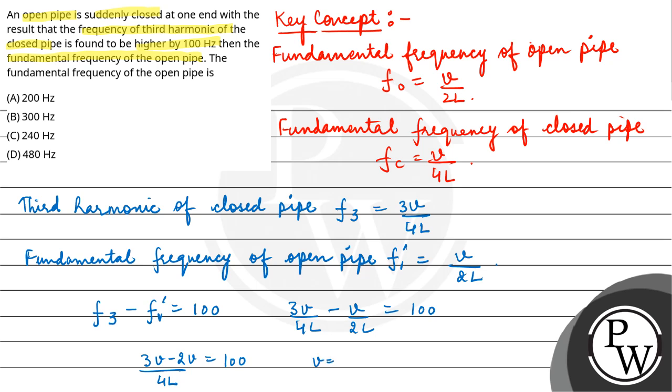Solving this, V by 4L equals 100. We can also say V by 2L equals 200 Hertz, and this is equal to the fundamental frequency of open pipe, F_1 dash.